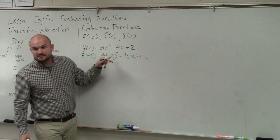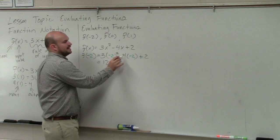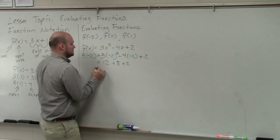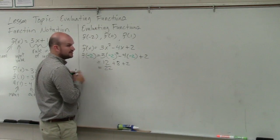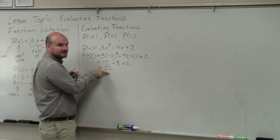Negative 2 squared is 4. 4 times 3 is going to be 12. Negative 4 times negative 2 is going to be a positive 8 and then plus 2. Therefore, we can say f of negative 2 is going to equal 22. Input is negative 2, output is 22.